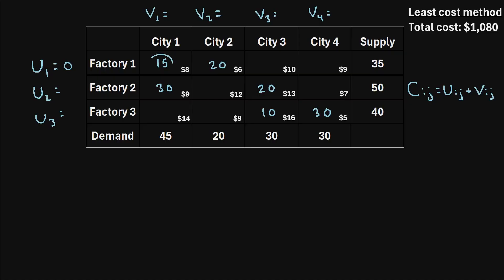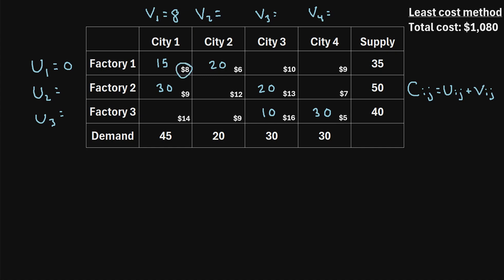The first allocated cell is shipping 15 units from factory 1 to city 1. This formula says that u1 plus v1 must equal 8. So if u1 is 0, v1 must be 8, so that 0 plus 8 equals the unit shipping cost. Now that we know u1 and v1, we can figure out the other values. The next allocated cell has a unit shipping cost of 9. If v1 equals 8, then 8 plus what equals 9? That would be 1, so u2 must equal 1.